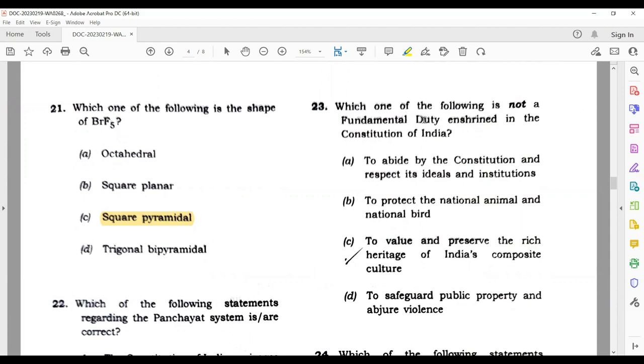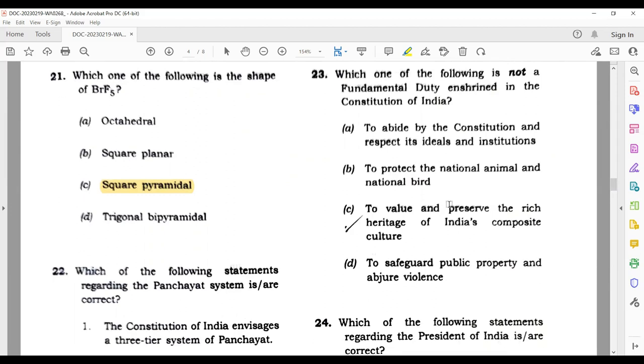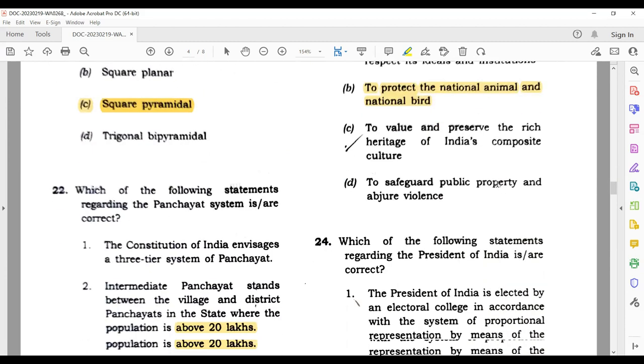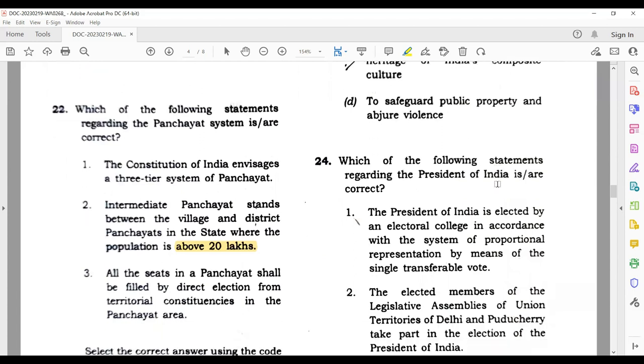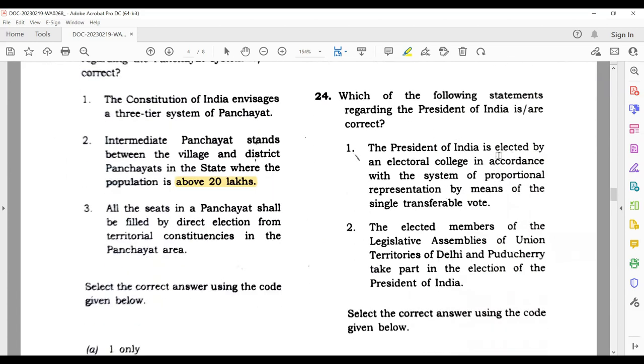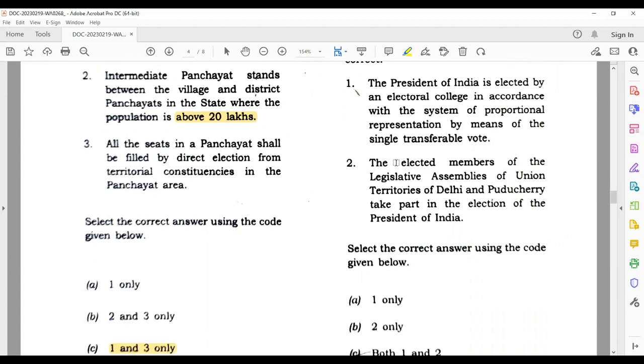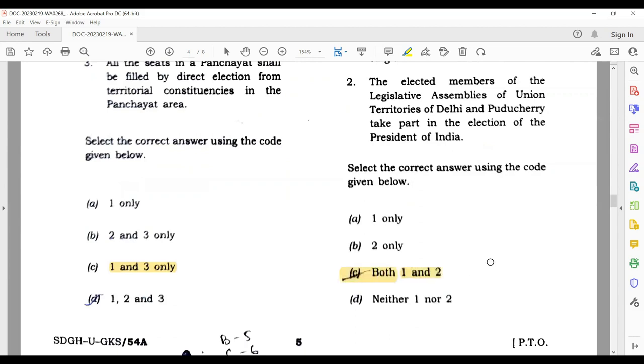Question number 23: which one of the following is not a fundamental duty enshrined in the Constitution of India? The answer is: to protect the national animal and national bird. This is your correct answer. Question 24: the President of India is elected by an electoral college in accordance with the system of proportional representation by means of single transferable vote. This is correct. And the elected members of the legislative assemblies of union territories of Delhi and Puducherry take part in the election of the President of India. This is also correct, so the correct answer is both 1 and 2.